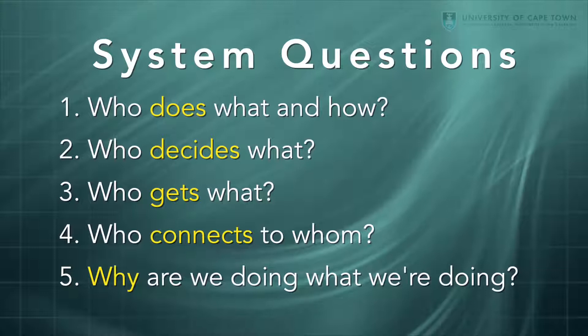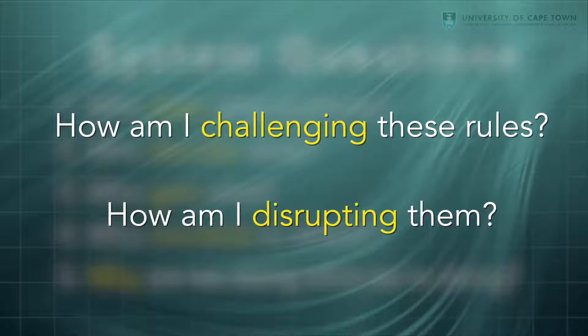By asking these five questions, what we're actually doing is mapping out the social system and the rules that govern it. The innovation questions overlaid over these are: how am I challenging these rules? How am I disrupting them? In the next video, we'll start to explore how using these sets of questions with an innovation lens of how am I challenging them will allow us to think about building stronger and potentially more impactful innovations.